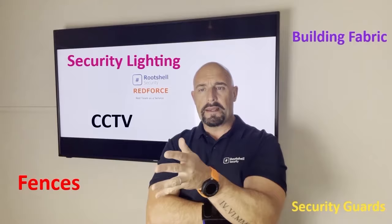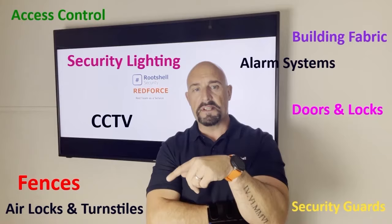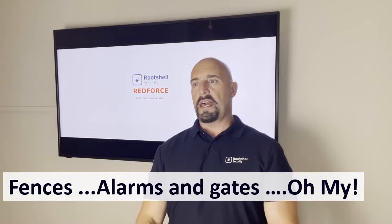Let's call out some physical security measures. We're talking things like fences, security lighting, CCTV, security guards, building fabric, doors, locks, access control, airlocks, turnstiles, alarm systems, pedestrian herding, privilege access rights, fences, alarms and gates. The list really does go on.